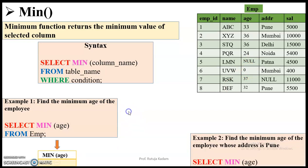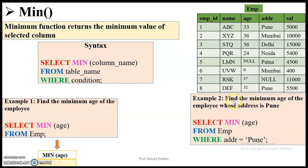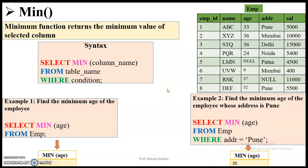The second example uses a WHERE condition: find the minimum age of the employee whose address is Pune. There are two records whose address is Pune — employee number one and employee number eight. Employee one has age 33 and employee eight has age 32, both with address Pune. Out of 33 and 32, the minimum is 32. So the returned value will be 32.